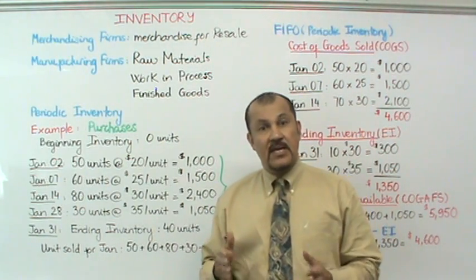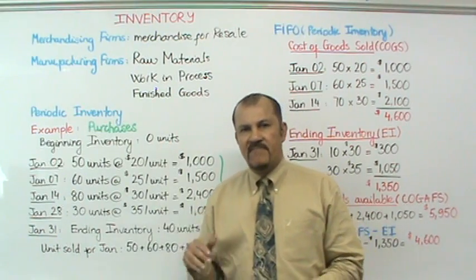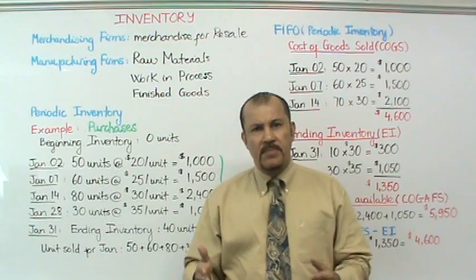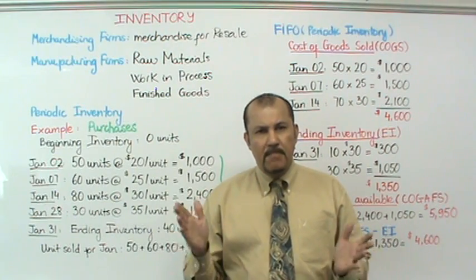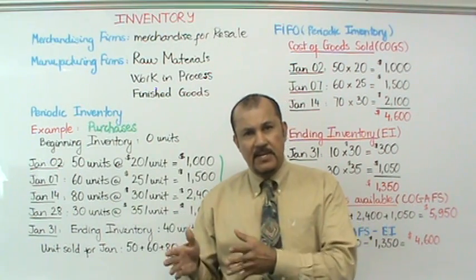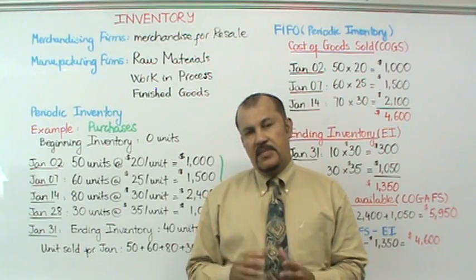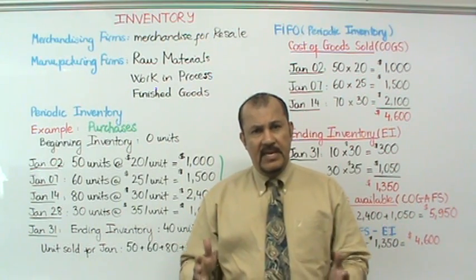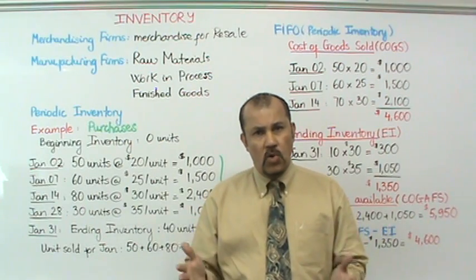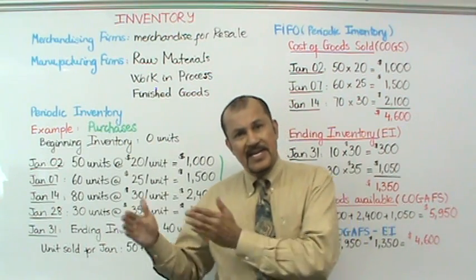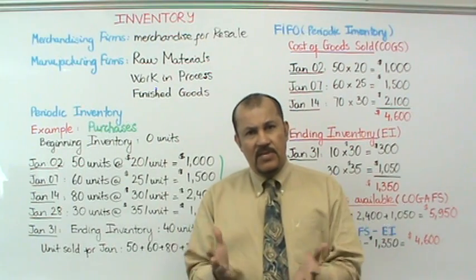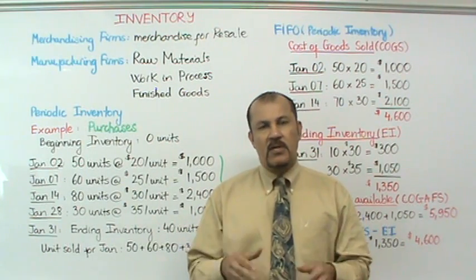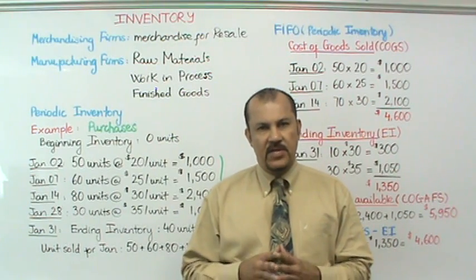What do each of these inventory accounts mean? Raw materials inventory — assume that a company manufactures tables and wood is the main ingredient. At the end of the month, if you took all the unused wood that has not entered the production process yet and calculated its value, that would constitute your raw materials inventory.